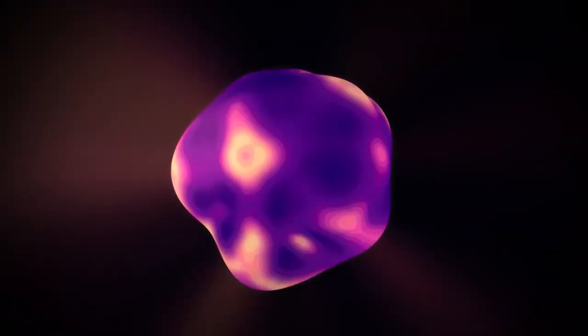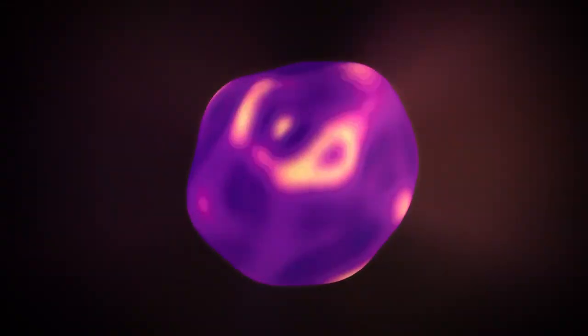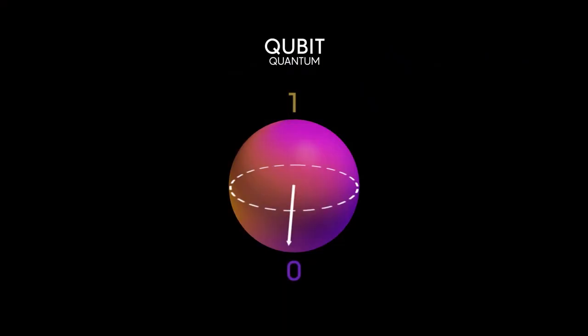However, since qubits are composed of subatomic particles, they function using subatomic logic. Qubits can be linear combinations of 0 and 1, or what are known as qubits.